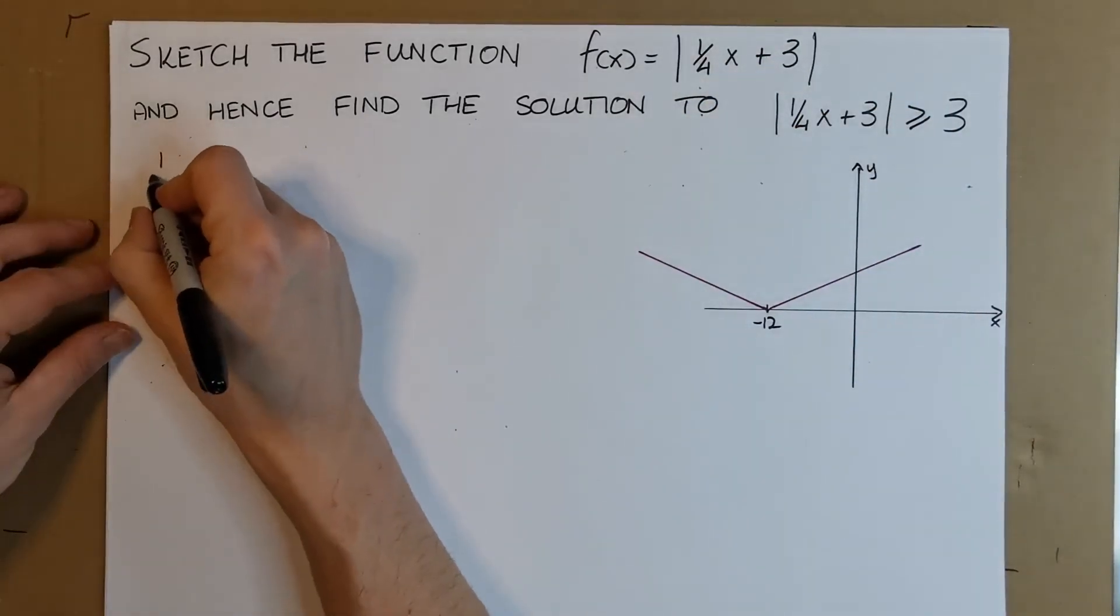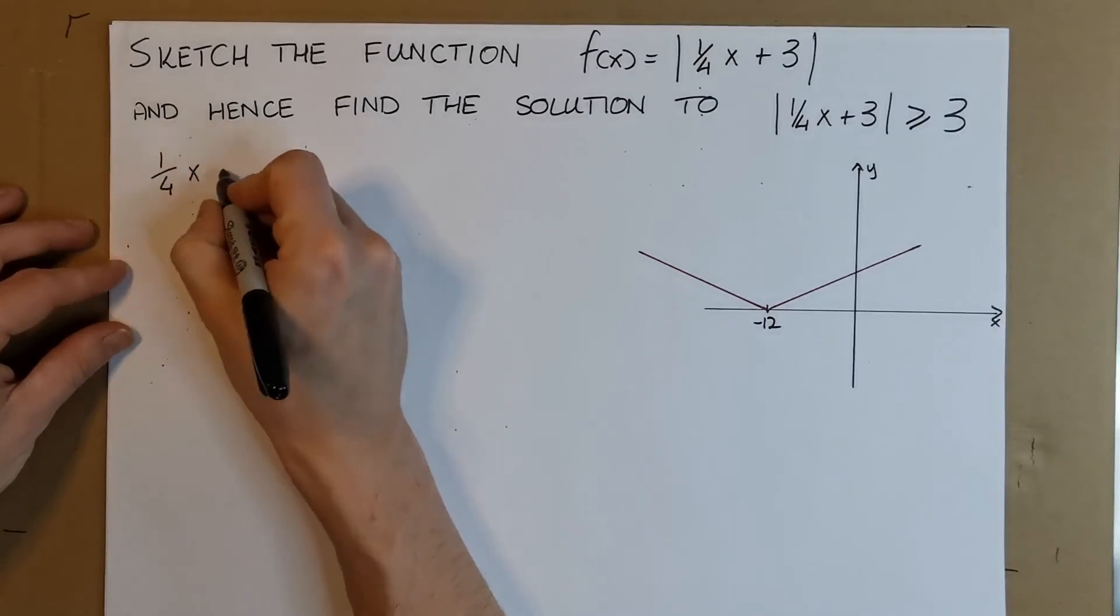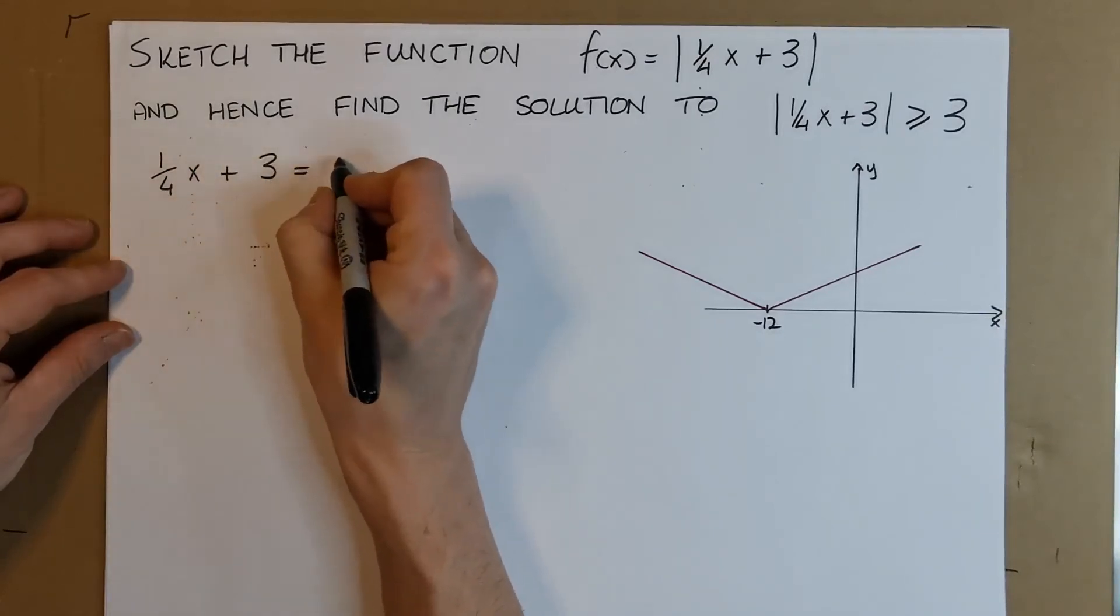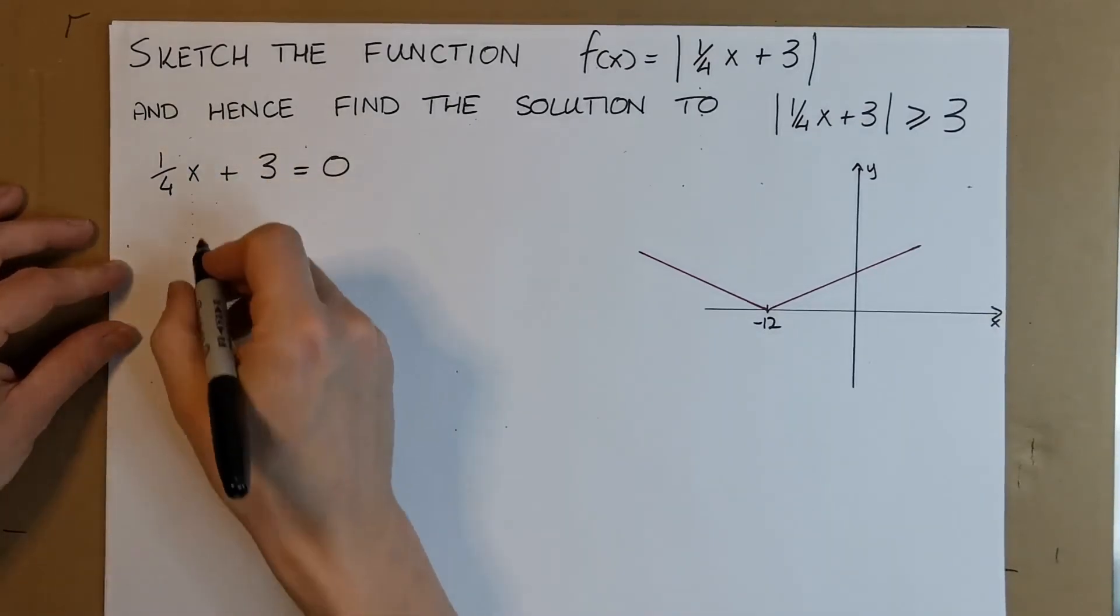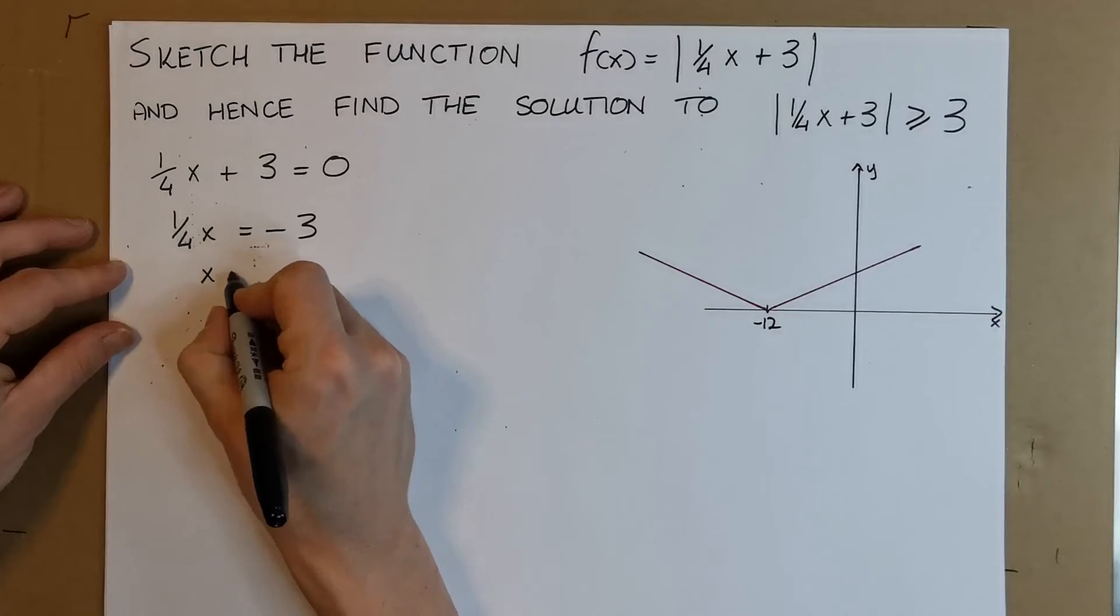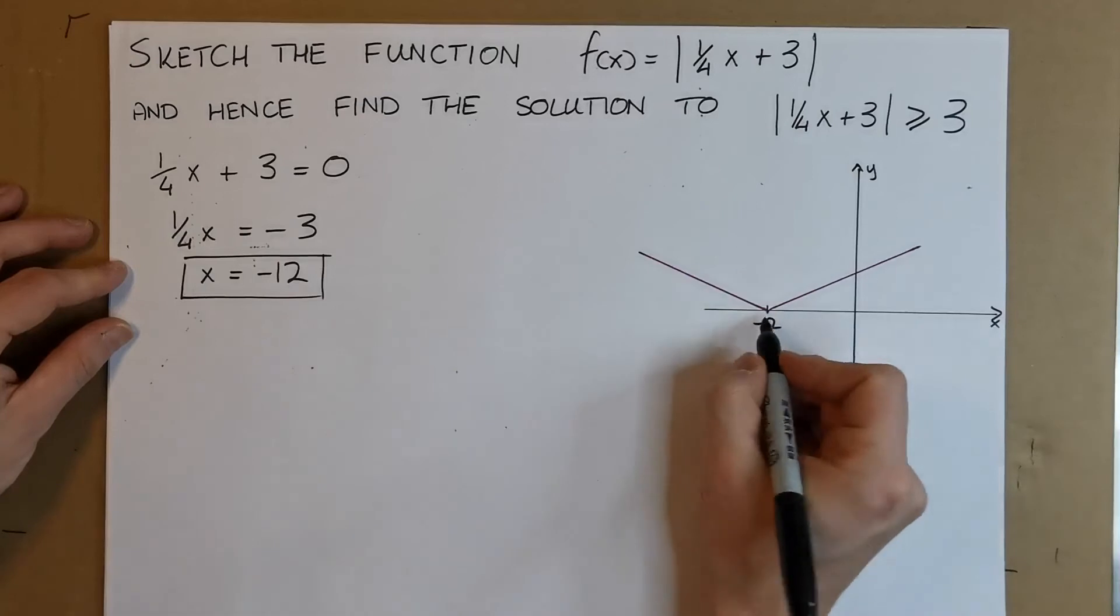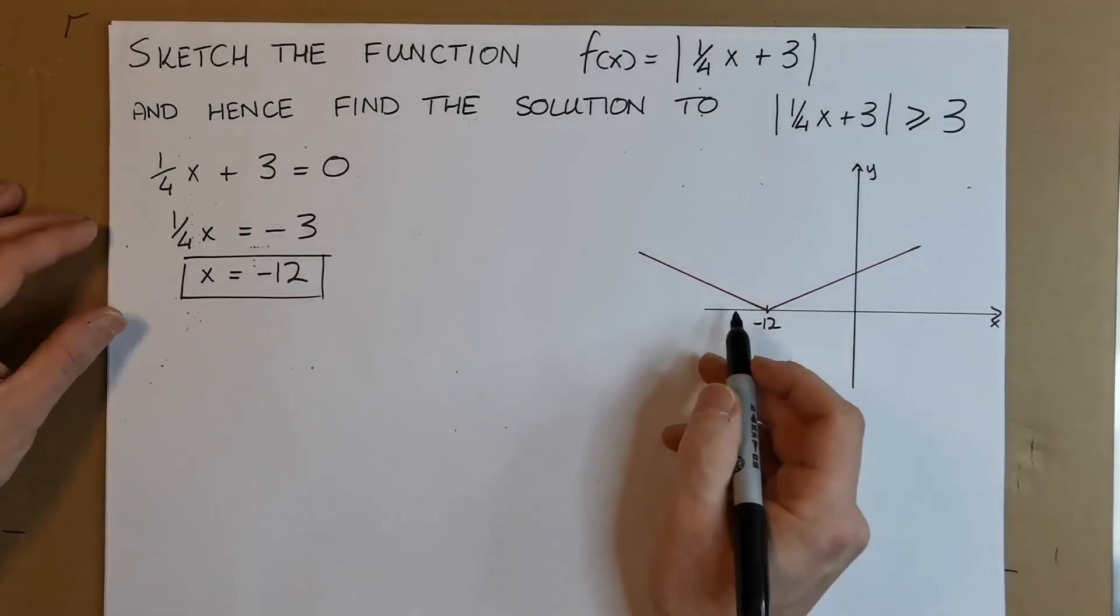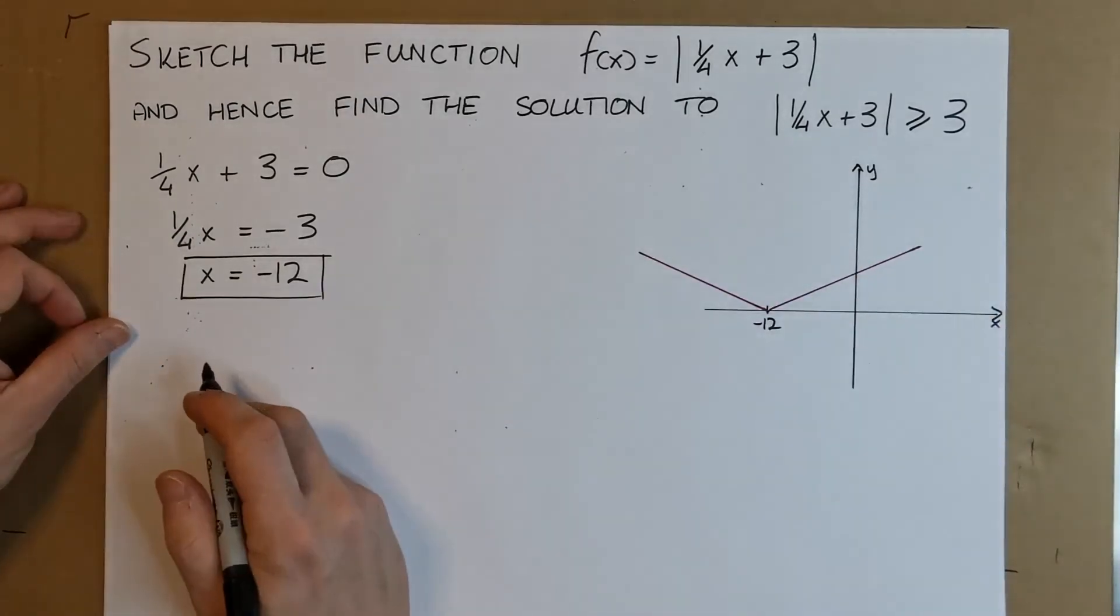When does 1/4x + 3 equal zero? You can solve this with simple algebra: 1/4x = -3, multiply both sides by 4. So when x = -12, that's where y = 0, and being a modulus graph, it's going to be V-shaped.